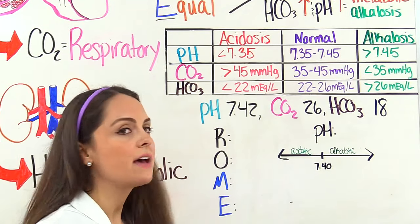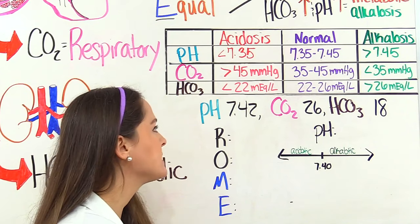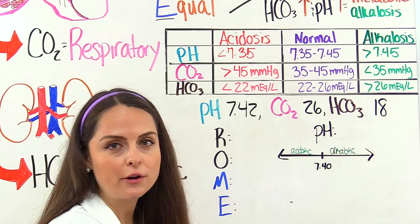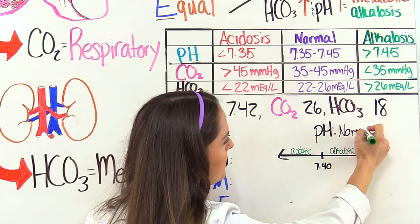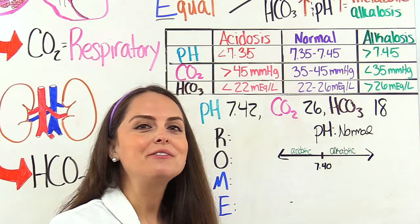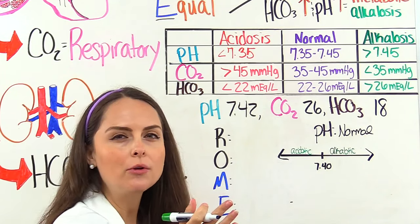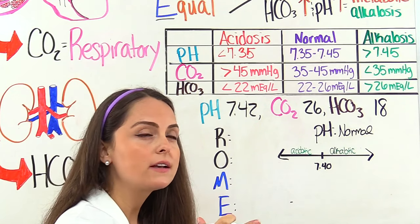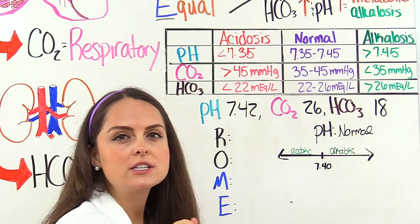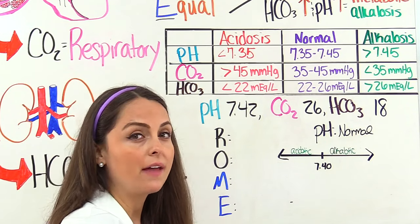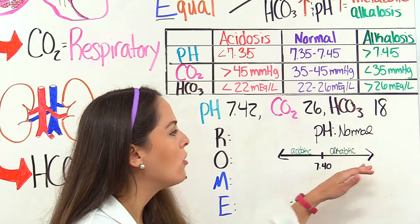Next problem: blood pH of 7.42, CO2 of 26, bicarb of 18. Blood pH normal is 7.35 to 7.45 — we're at 7.42, so we're normal. When you see a normal pH, think full compensation. But we need to determine: is this respiratory or metabolic, and is it acidosis or alkalosis?